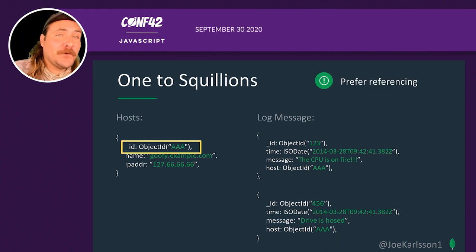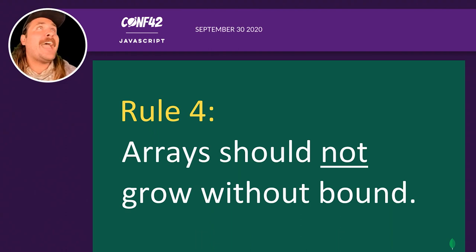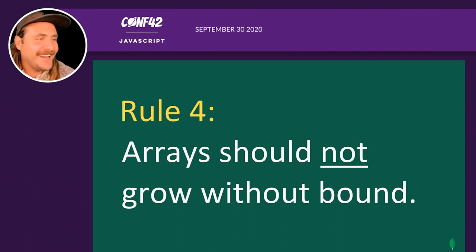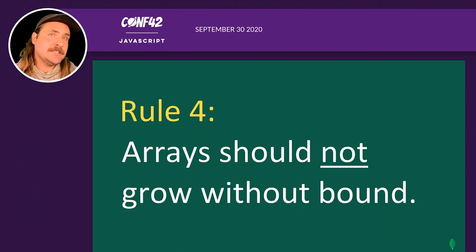We're obviously going to prefer referencing here because you could be growing massively. Rule four — and one of the most important: if you have an array that you think could be growing at an unbounded size without any stop gaps, that is an anti-pattern and a code smell. You should try to avoid that. Anytime you have an array growing at unbounded size like a log file, use referencing and the one-to-squillions pattern.